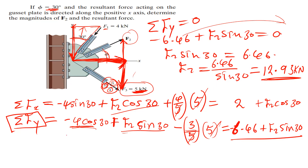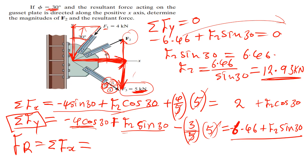So we get F2 = 12.93 kilonewtons. Now to find the resultant force: since the resultant has no y-component, it equals only the x-component — that is, the summation of forces in x. We substitute the value of F2 back in.